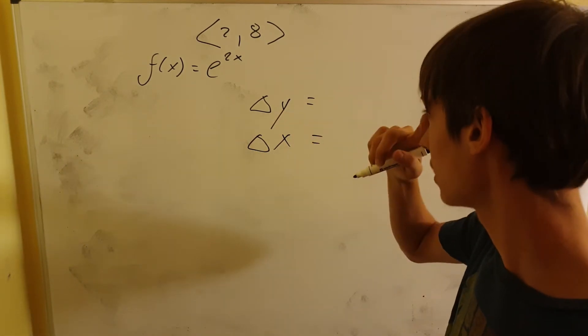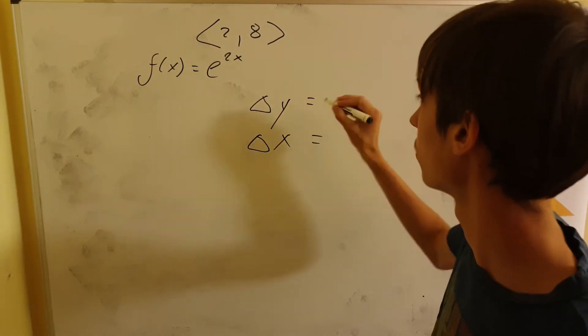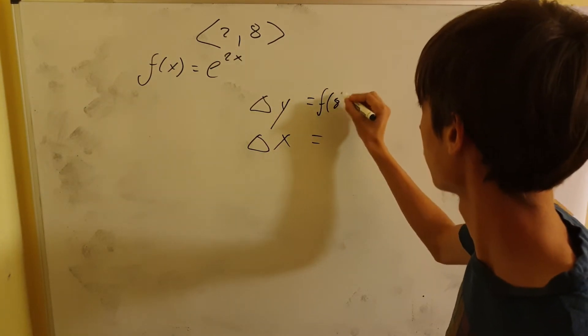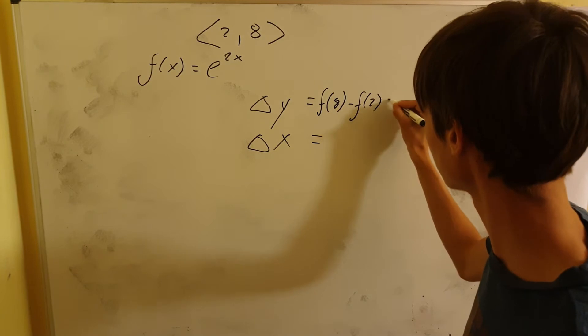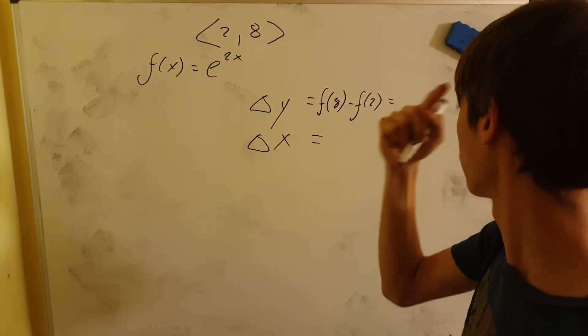Delta y is going to be this function evaluated at eight minus this function evaluated at two. So what is this going to be? Well, just plug in eight and minus plug in two.